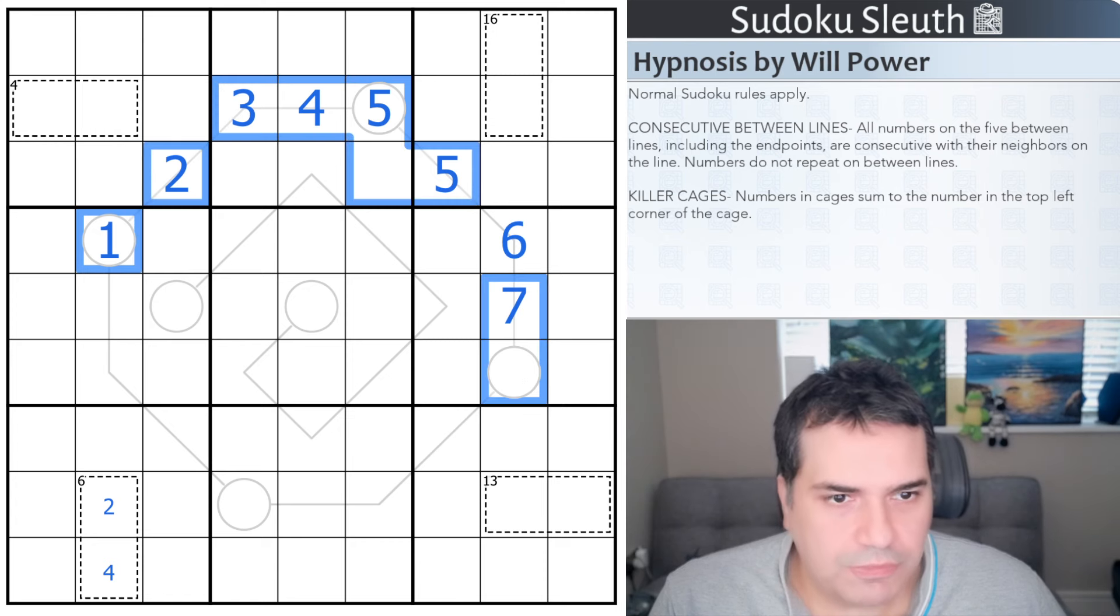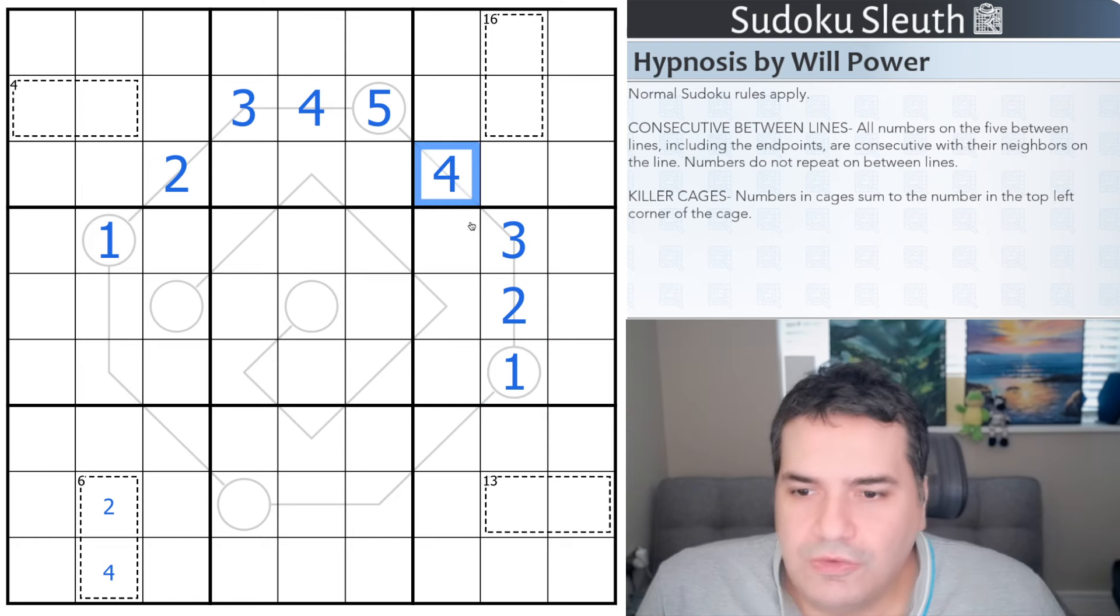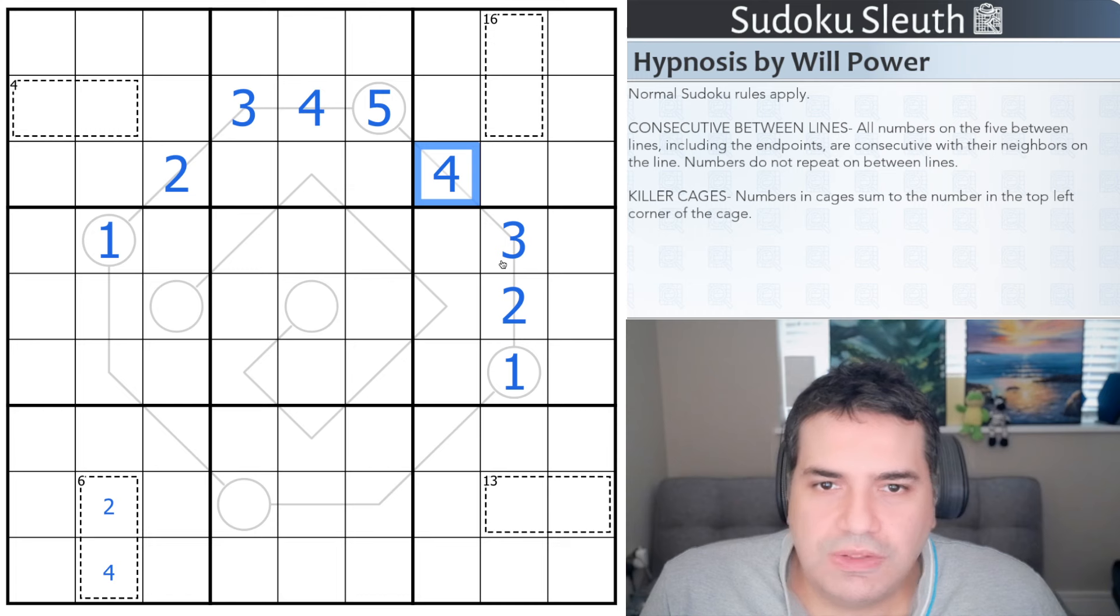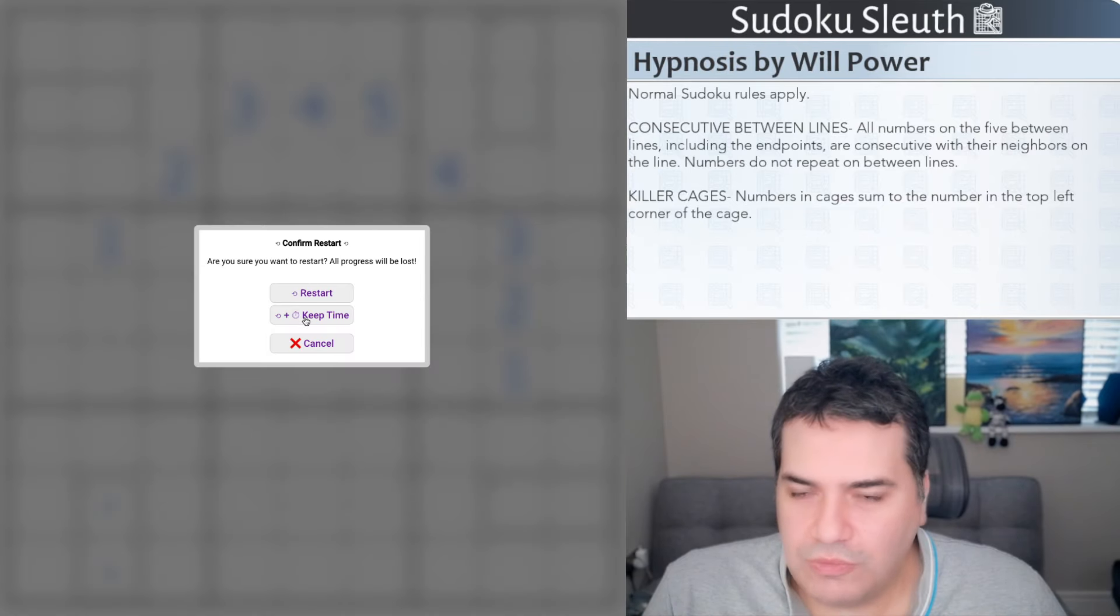Let me clarify - all numbers on lines, including the endpoints, are consecutive with their neighbors on the lines. Yeah, I think it's fair game to do something like this. Well anyway, that's the way I'm going to be playing it. Only thing left to say is, if you don't feel like being hypnotized with this particular puzzle and you want to shake it off, link will be in the description for you to play along. With that said, I'm going to restart the clock and see how I get on.